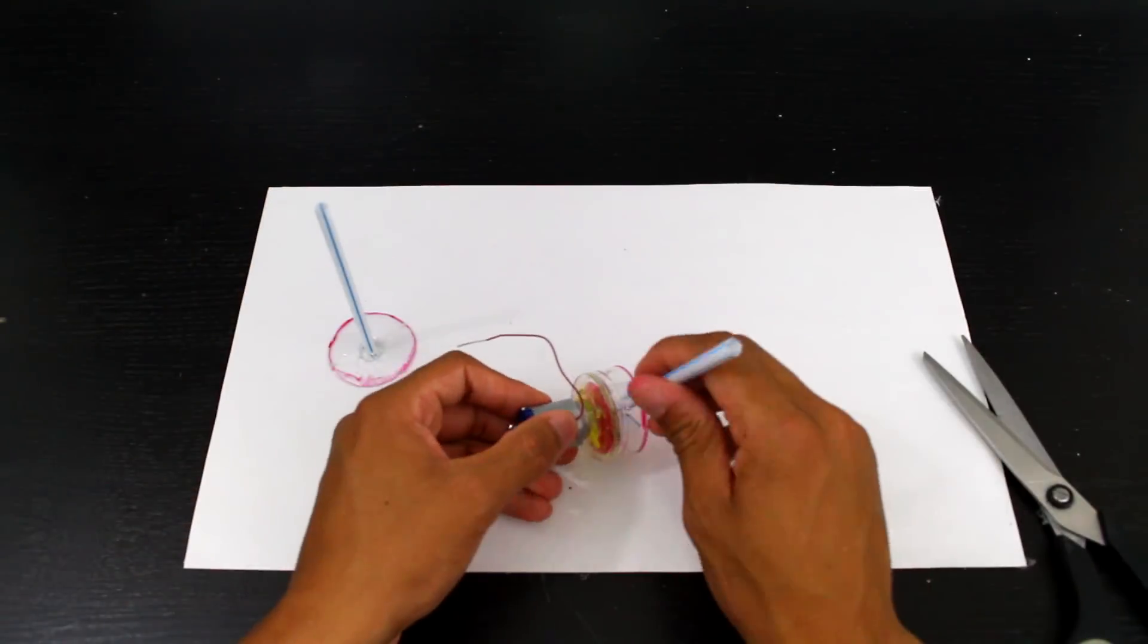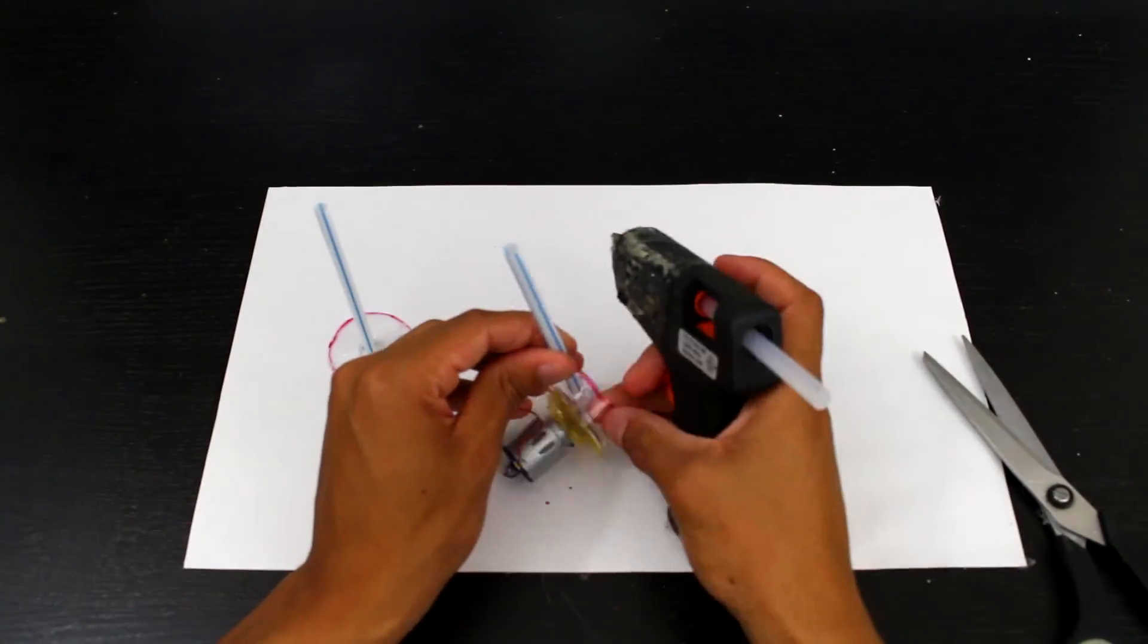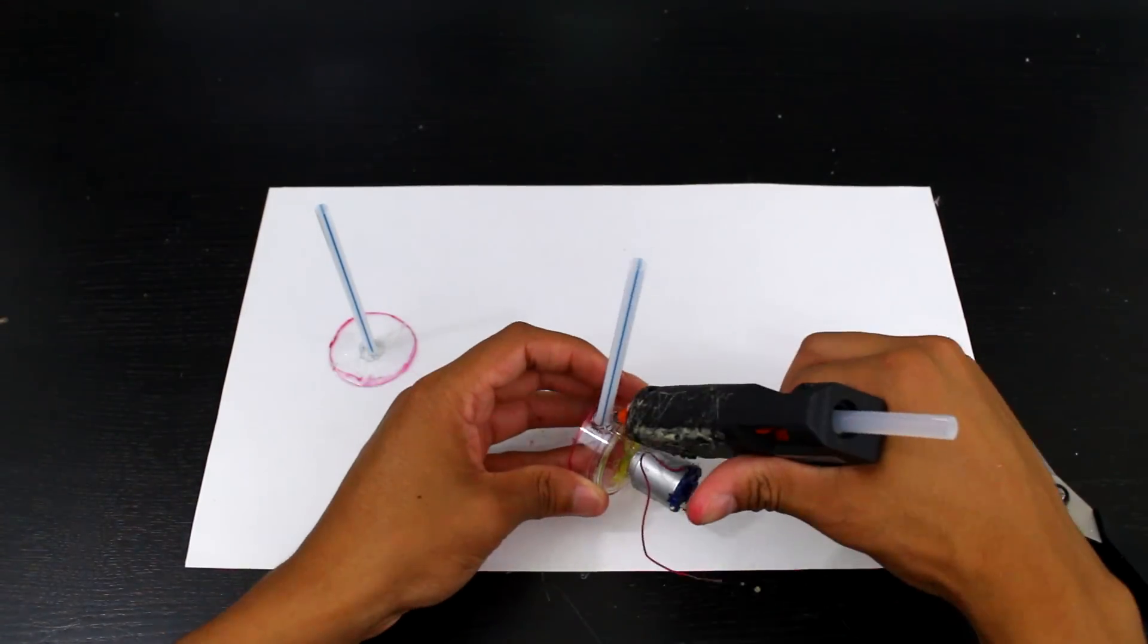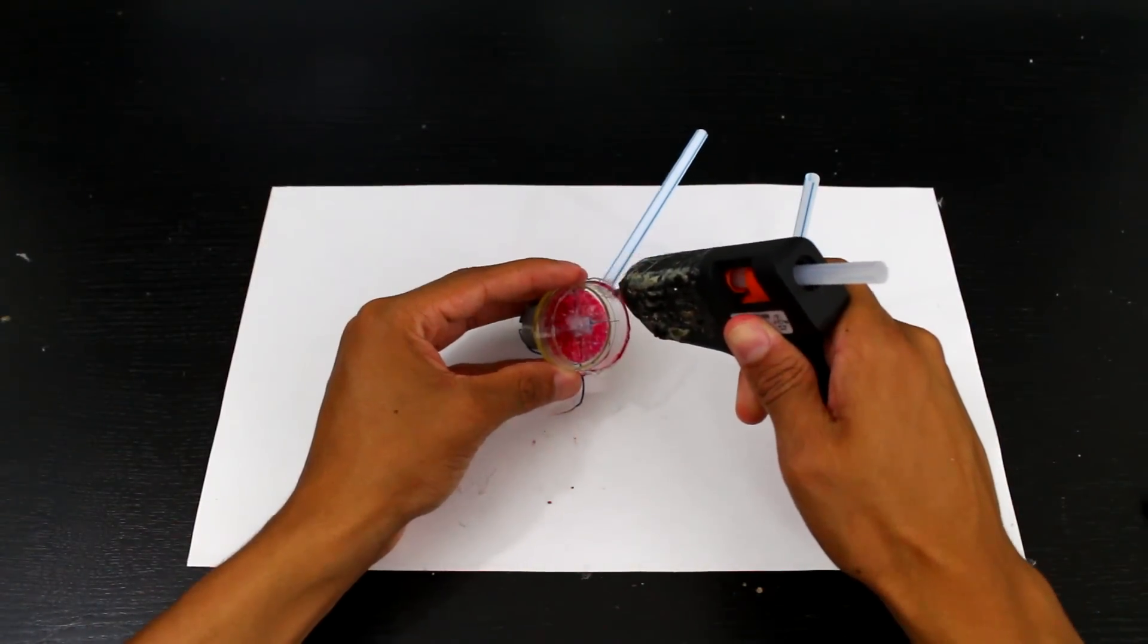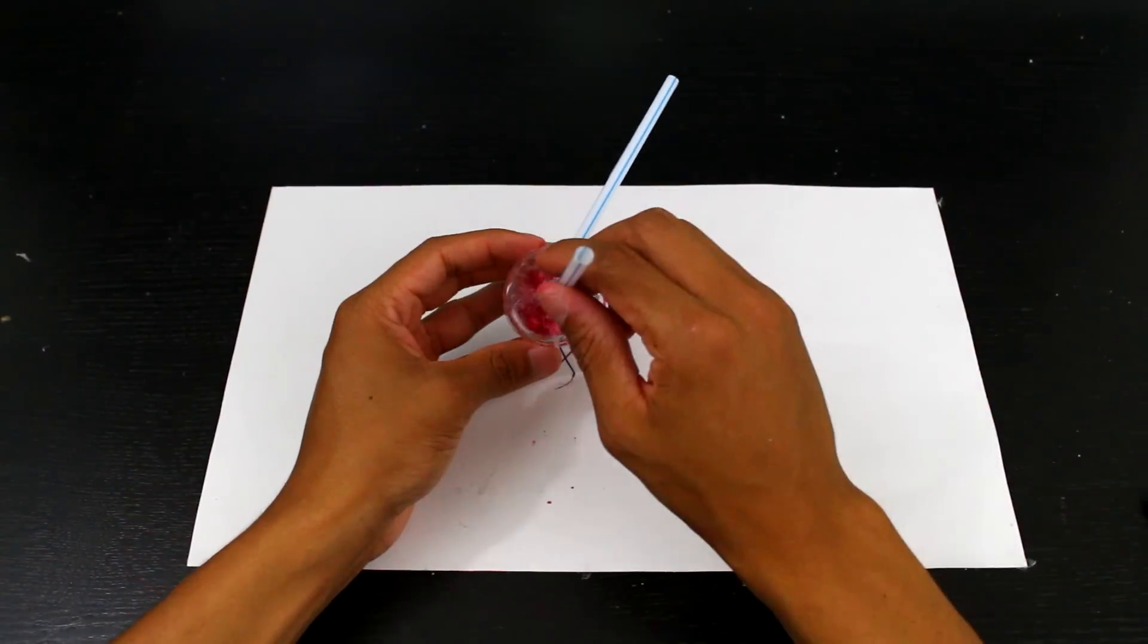And glue a straw onto both the intake and exit. Now putting glue around, we can glue on that big circle that we just cut out.